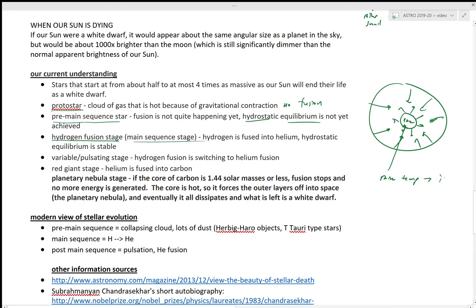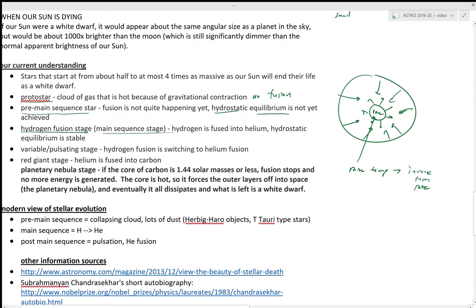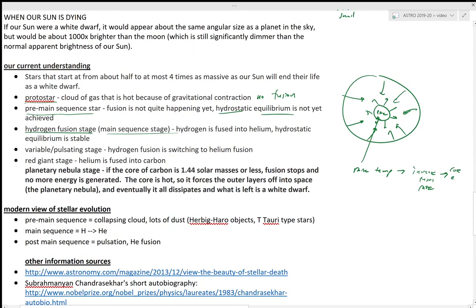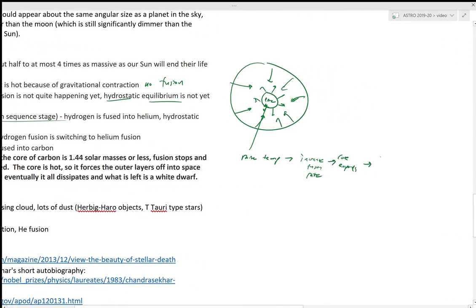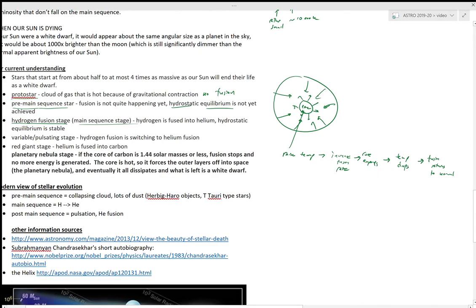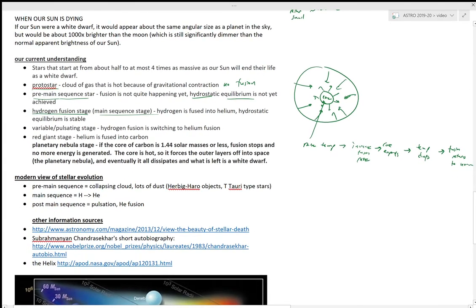What that would do is that would increase the fusion rate. And then what would happen is the core would expand outwards. But as the core expands outwards, the temperature drops and the fusion rate returns to normal. So we have this built-in mechanism for stabilization.